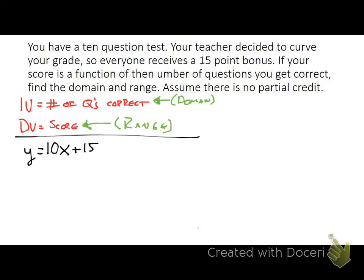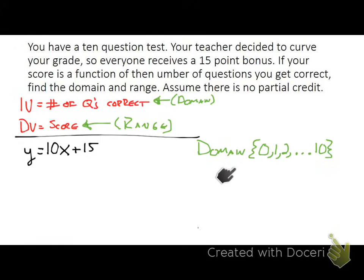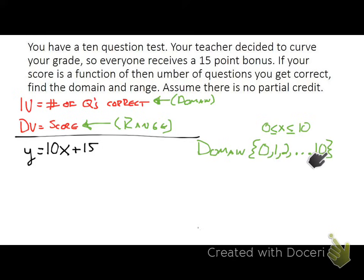Now let's discuss our domain. It's going to be all the numbers of questions you could get correct. We could get zero questions correct, one, two, and that goes all the way up to 10 — it's a 10-question quiz. Note that I didn't write this with inequality or interval notation, because that notation implies a continuous function, meaning I could have 1.3 or 7.92 questions correct. Here you're getting whole-number values, so we write it with this set notation instead.